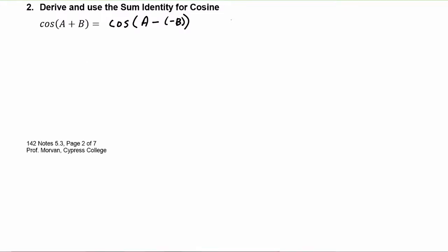A quick reminder: we know that cosine — I'm going to purposely use different letters here — think of it as cosine of x minus y would be cosine of the first, x, times cosine of the second, y, plus sine of the first, x, times sine of the second, y.